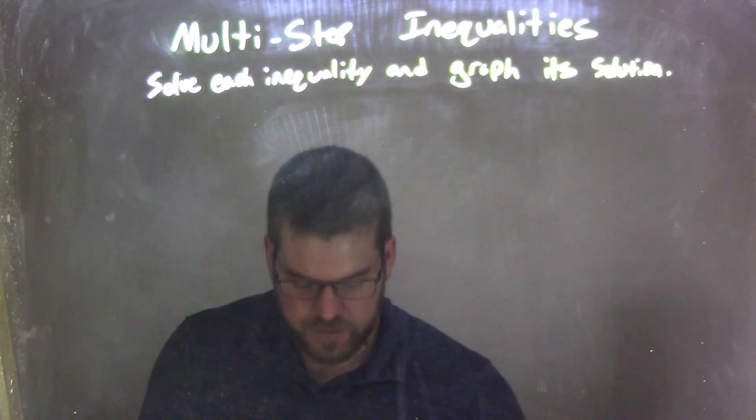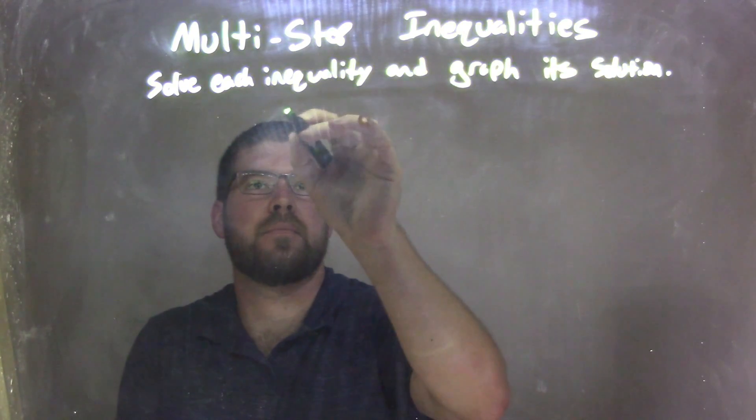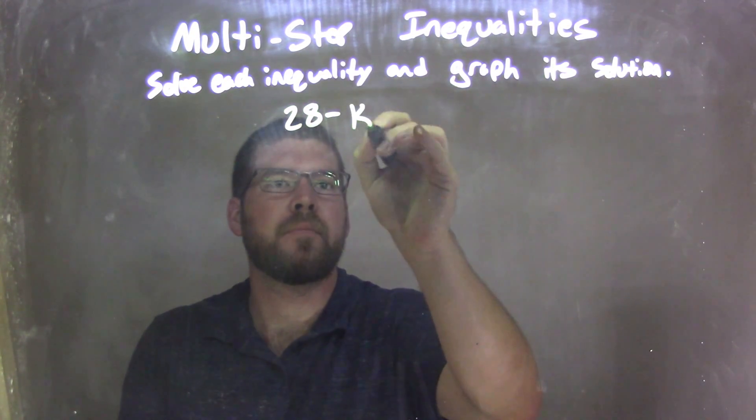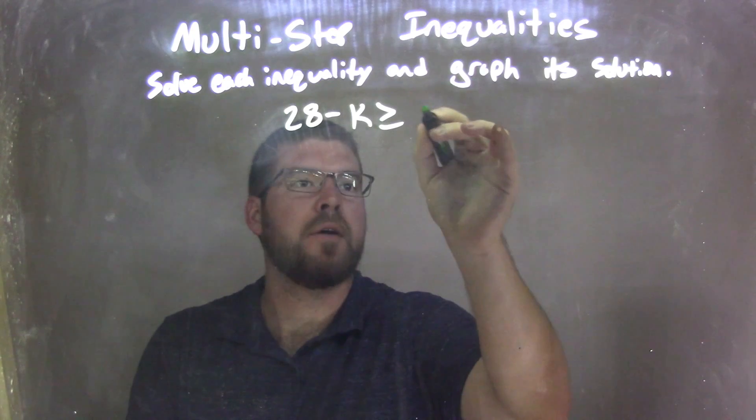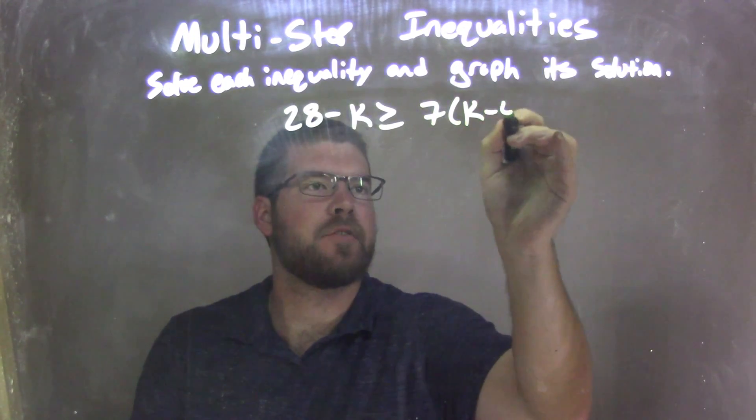We're going to solve each inequality and graph its solution. So if I was given this inequality, 28 minus k is greater than or equal to 7 times (k minus 4).